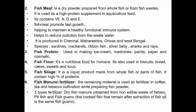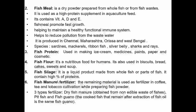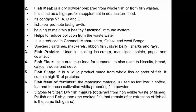Fish protein is used in making ice cream, medicines, paints, paper and cosmetics. Fish flour is a nutritious food for humans and is also used in biscuits, bread, cakes, frites and soup. Fish silage is a liquid product made from whole fish or parts of fish and contains a high percentage of proteins. Fish manure or fertilizer is a remaining material used as fertilizer in coffee, tea and tobacco cultivation, produced while preparing fish powder. It is of three types: dry fish manure obtained from non-edible waste of fishes, pit fish, and fish guano.